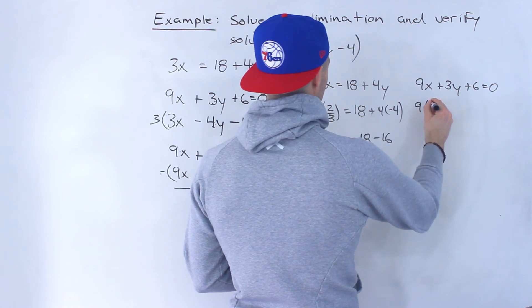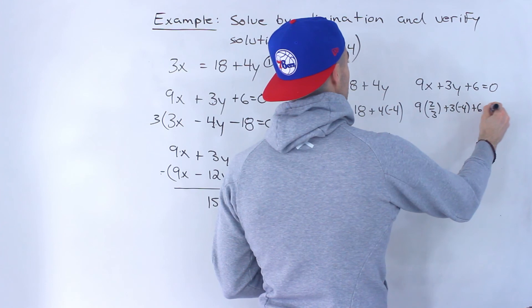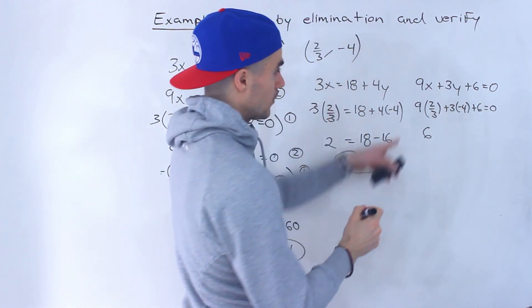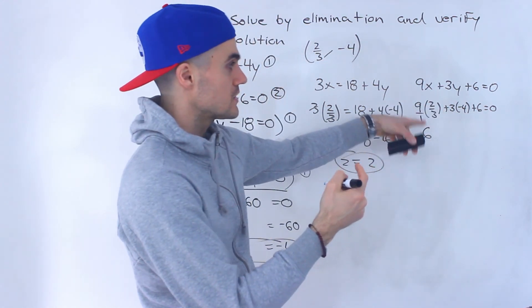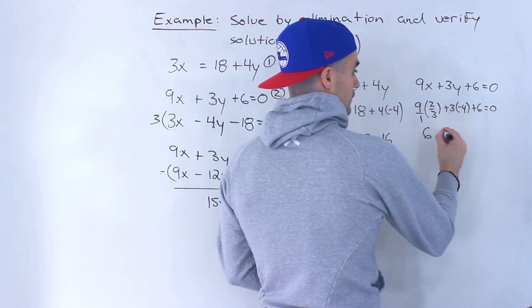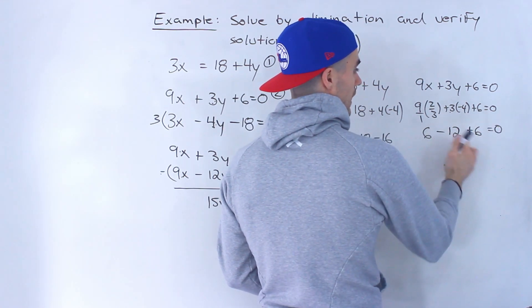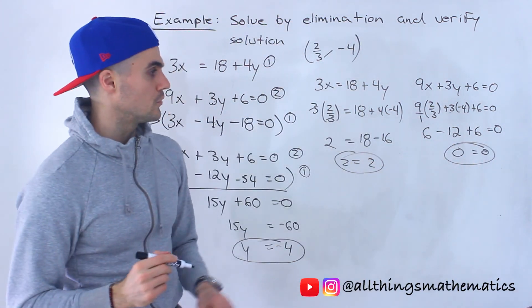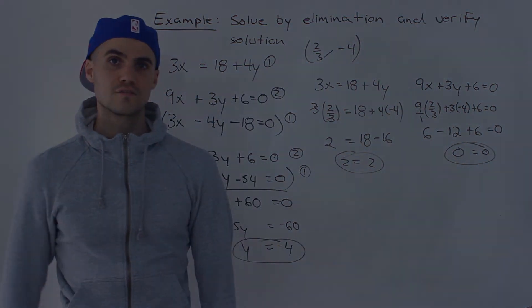And over here we would have 9 times 2 over 3 plus 3 times negative 4 plus 6 equals 0. 9 times 2 over 3 would give us 6. 3 times negative 4 is negative 12 plus 6. Notice 6 plus 6 is 12, minus 12 is 0. So 0 equals 0. We verified it with both lines, left side equals right side. So 2 over 3, negative 4, that's the final answer.